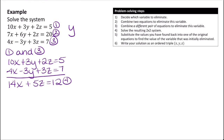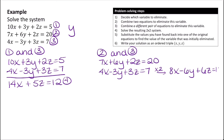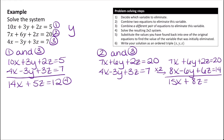Now combining equations 2 and 3, I have 7x plus 6y plus 2z equals 20, and 4x minus 3y plus 3z equals 7. I still need to eliminate y, so I multiply the bottom equation by 2 to get 8x minus 6y plus 6z equals 14. Adding to 7x plus 6y plus 2z equals 20 gives 15x plus 8z equals 34 — equation 5.